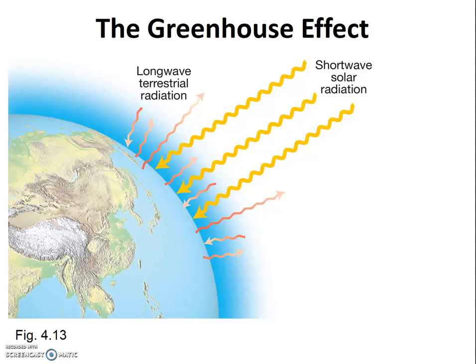The previous video clip dealt with the four things that can happen to solar radiation as it travels through the Earth's atmosphere. Those concepts are very important, and we're going to use them here to describe the greenhouse effect.